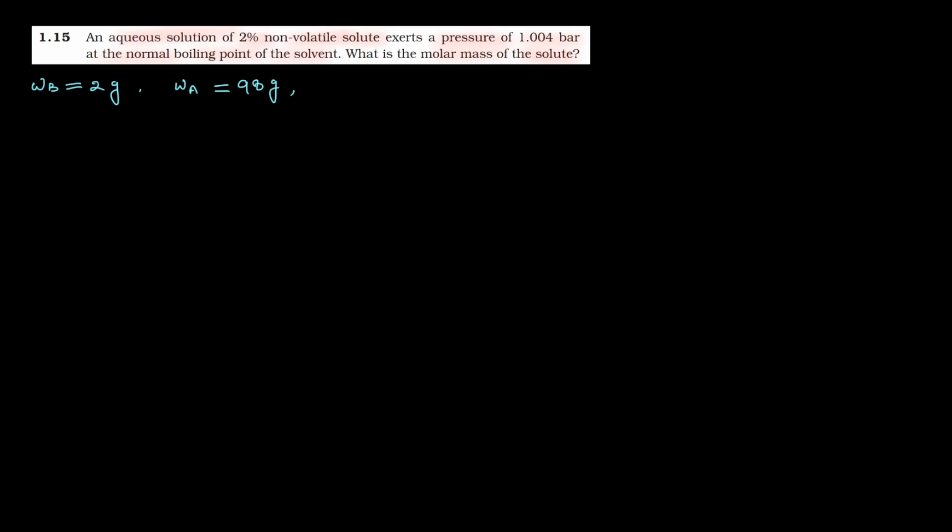After that, what is given? It exerts a pressure of 1.004 bar. So this means ps value is given as 1.004 bar. At the normal boiling point of the solvent - normal boiling point of solvent is 1 atm. So we will write here p₀, which means p₀ water is 1 atm, 1 atmospheric pressure. If we convert it to bar, it becomes 1.013 bar. What is mₐ? For water, mₐ is 18 gram per mole. Molar mass of water is 18 grams per mole. You have to calculate mb, molar mass of solute.